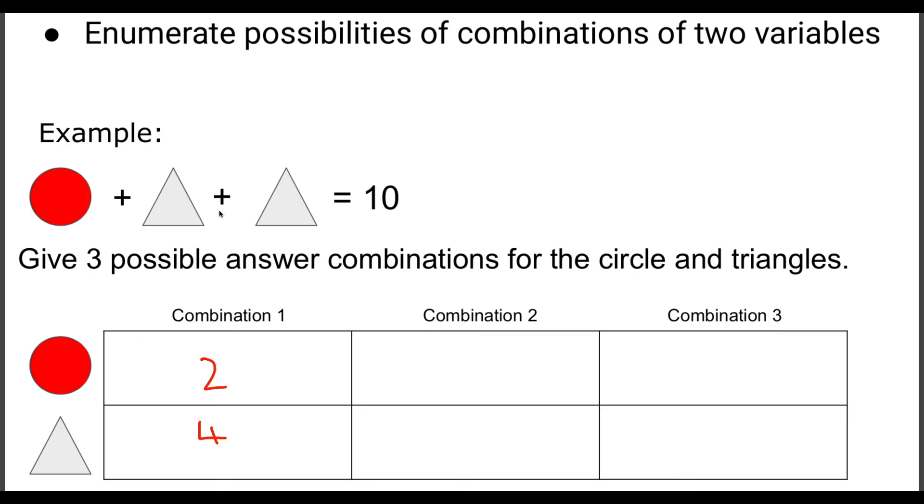If we put another combination in, let's try four. If the circle is four, we're going to need six to make up ten. So that would mean that each triangle is worth three. Because four add three is seven, add three is ten. And lastly then, let's go with six. If we've got six here, we need four in total to make ten. So the triangle would be worth two. Because six add two, add two is ten.